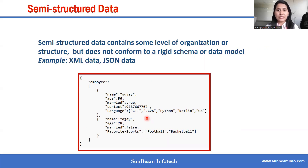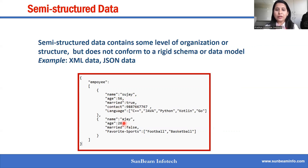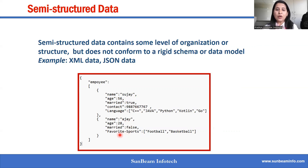In this JSON example, employee Sujay has contact information and language information available, but employee AJ does not have contact information — only language is available, while favorite sports information is available for AJ instead. This illustrates the flexible, non-rigid nature of semi-structured data.